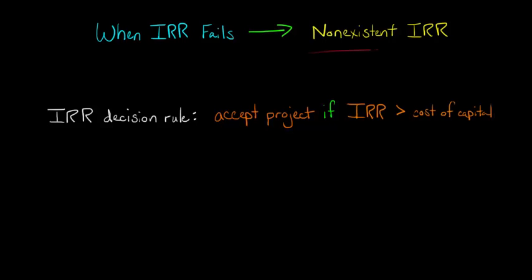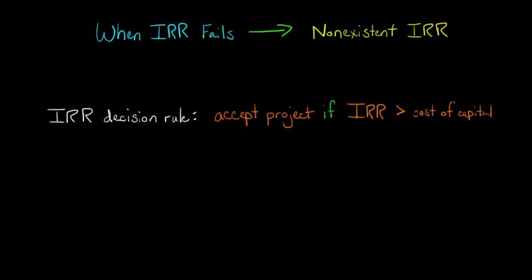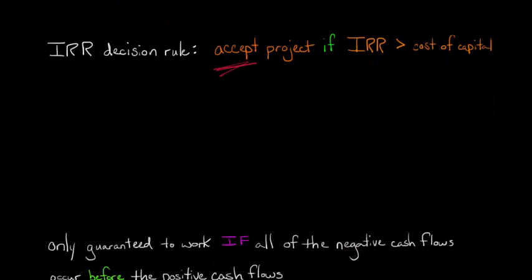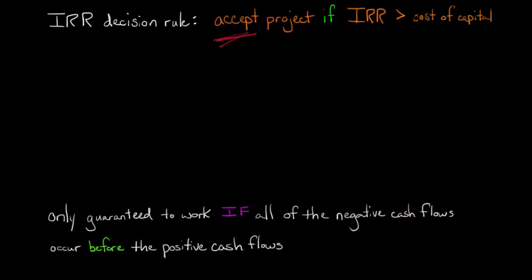I'm going to walk you through an example where we have a non-existent IRR for a project. But first, I just want to quickly review the decision rule for IRR: we're only going to accept a project if the internal rate of return is greater than the cost of capital — the opportunity cost of capital. So if IRR is higher than the cost of capital, we accept. But this decision rule is only guaranteed to work if all of the negative cash flows of that project come before the positive cash flows.